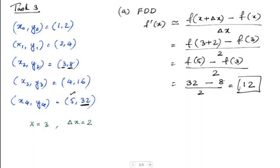That's the answer for the forward divided difference. Now we calculate the central divided difference where the derivative of the function is approximately equal to f(x+Δx) minus f(x-Δx) divided by 2 times Δx.